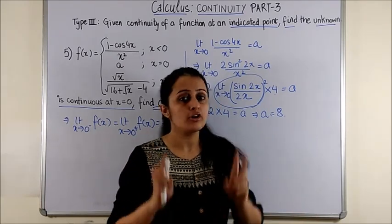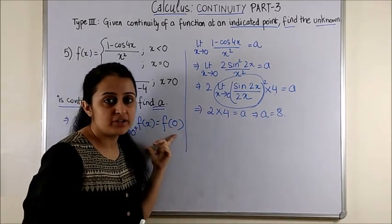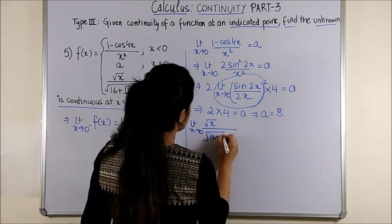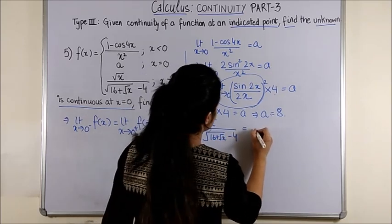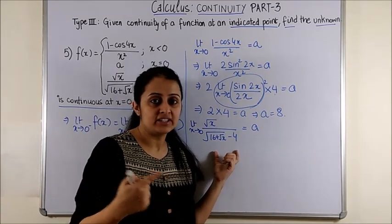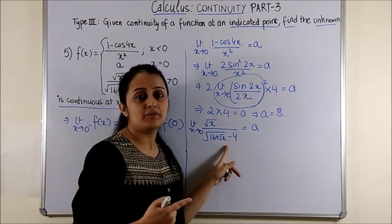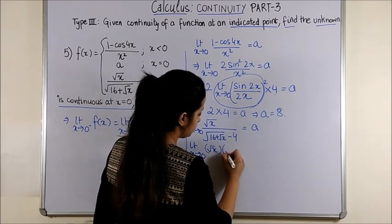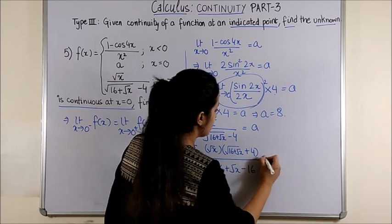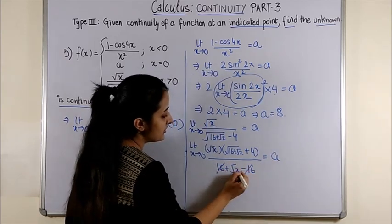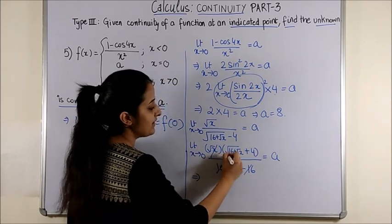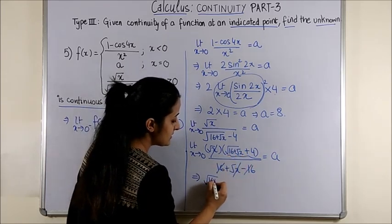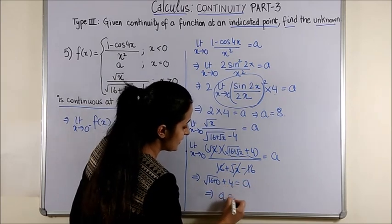Although we have already got a equal to 8 by just equating LHL with the value of the function, but still in order to be doubly sure find a from RHL equal to f of 0 also. Limit x tending to 0 you have root x upon 16 plus root x minus 4 is equal to a. Now if you recollect your class 11th limits once again you would be tackling this problem by rationalizing. So we rationalize the denominator. Rationalizing you get 16 plus root x minus 16. Now this root x and this root x get cancelled. You are only left with this. When you substitute x as 0 you get root 16 plus 0 plus 4 is a, that means a is once again 8.